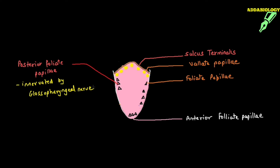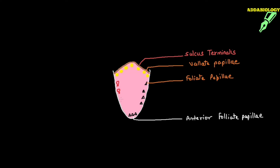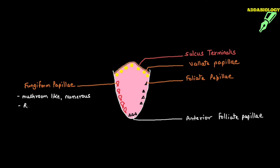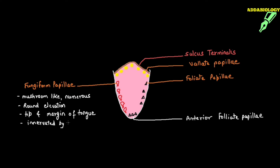The third type is fungiform papillae. As the name suggests, 'fungi' means fungus — so these are mushroom-shaped projections. They are numerous, more in number compared to foliate and vallate papillae, and are round and elevated. Fungiform papillae are present at the tip and margins of the tongue. Vallate, foliate, and fungiform papillae all have taste buds. Fungiform papillae are innervated by the facial nerve.